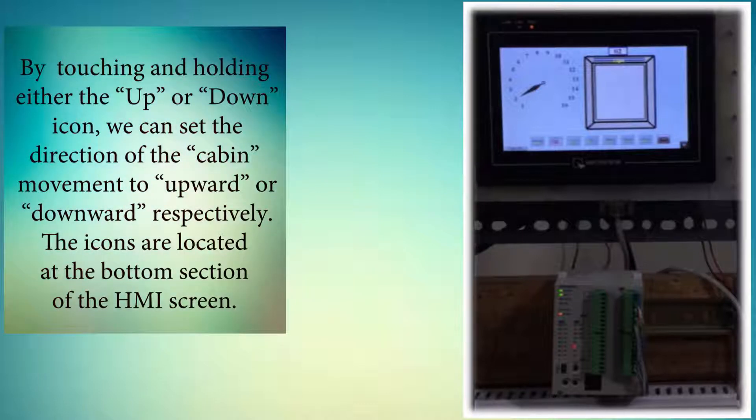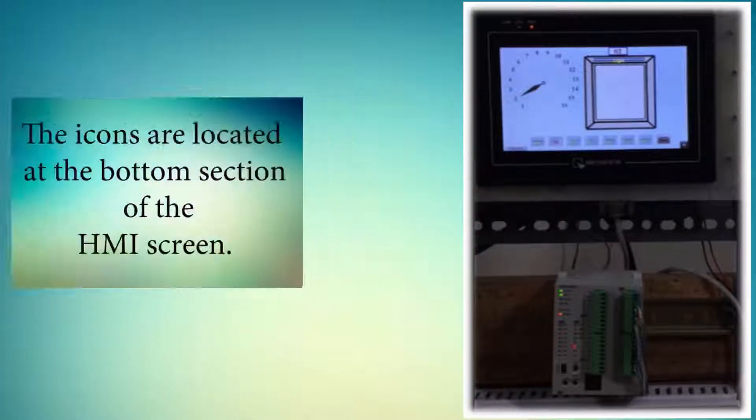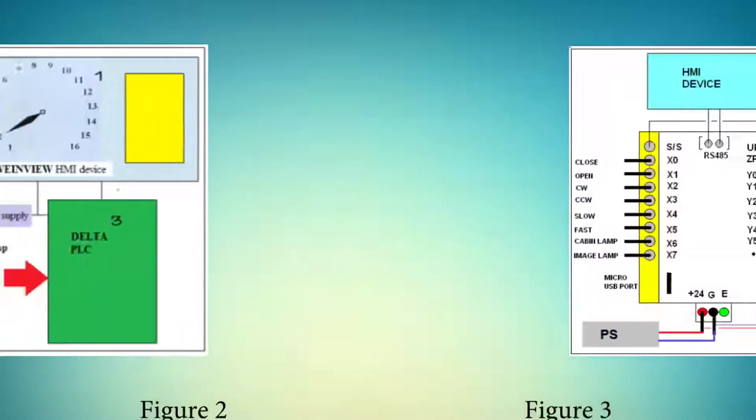By touching and holding either the up or down icon, we can set the direction of the cabin movement to upward or downward respectively. The icons are located at the bottom section of the HMI screen.